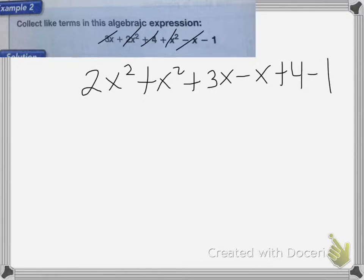Now all my terms are grouped. Now I'm going to collect those like terms using the associative property by putting parentheses around them.